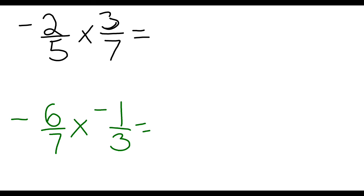So I'm going to do two more practice problems. The top one, negative 2 fifths times positive 3 sevenths. So I'm going to multiply across the top. 2 times 3 is 6, and then multiply across the bottom. 5 times 7 is 35. There's only one negative, so the answer is negative.